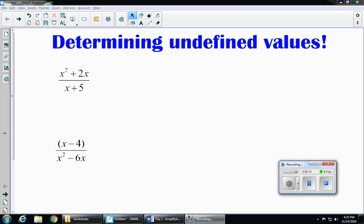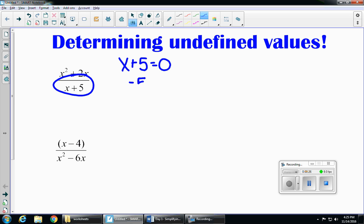So if we look at our first example, x squared plus 2x over x plus 5. To find my undefined values, I'm going to take my denominator, x plus 5, and I'm going to set it equal to 0. So we subtract 5 on both sides, so x equals negative 5. That's my undefined value.